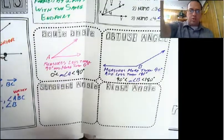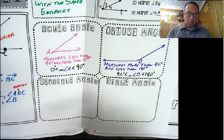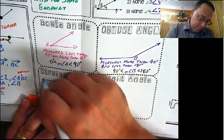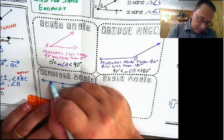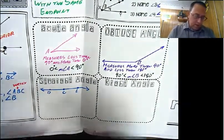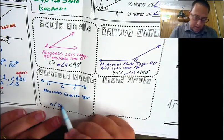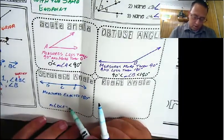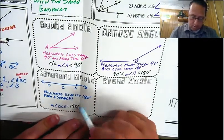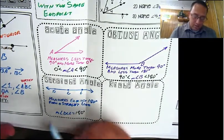That brings us to the straight angle. A straight angle looks like a straight line - I'll use a straight edge for this one since it is called a straight angle. Angle DCE. A straight angle measures exactly 180 degrees: the measure of angle DCE equals 180 degrees. The reason it's called a straight angle is it forms a straight line. It is formed by two rays with the same endpoint - these are also opposite rays.